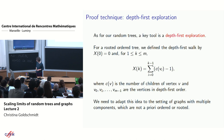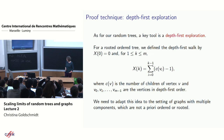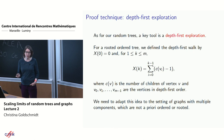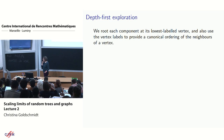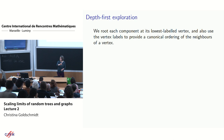I want to show why this is true using the depth-first exploration techniques from the tree setting. For a rooted ordered tree we defined the depth-first walk by starting at 0 and summing (number of children − 1) for each visited vertex. We need to adapt this to graphs with multiple components, where we have no natural root and no ordering.